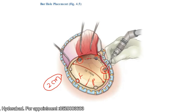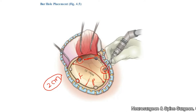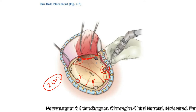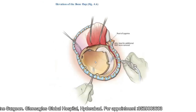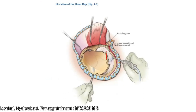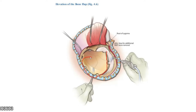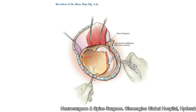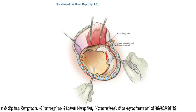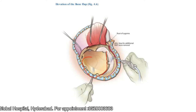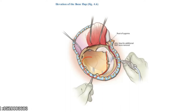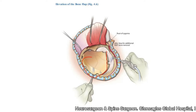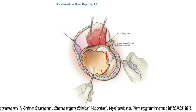At the sphenoid ridge, I drill it with a burr to make it paper-thin. Once I have placed the burr holes, I use the craniotome to complete the cuts. Then a periosteal elevator is introduced along the posterior ridge of the craniotomy and used to elevate the bone from the underlying dura. The bone is properly placed in antibiotic saline. If you are planning to preserve it outside the body, hand it over to your assistant for appropriate preservation.